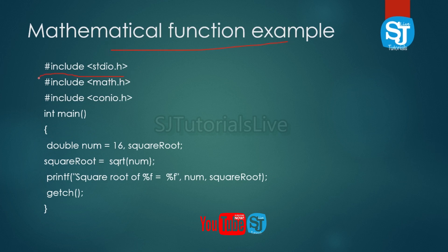The result shows the mathematical function at work. Double num equals 16 — that means the value is 16. Then, the square root variable is declared: square root equals sqrt(16). The sqrt function computes the square root of 16.